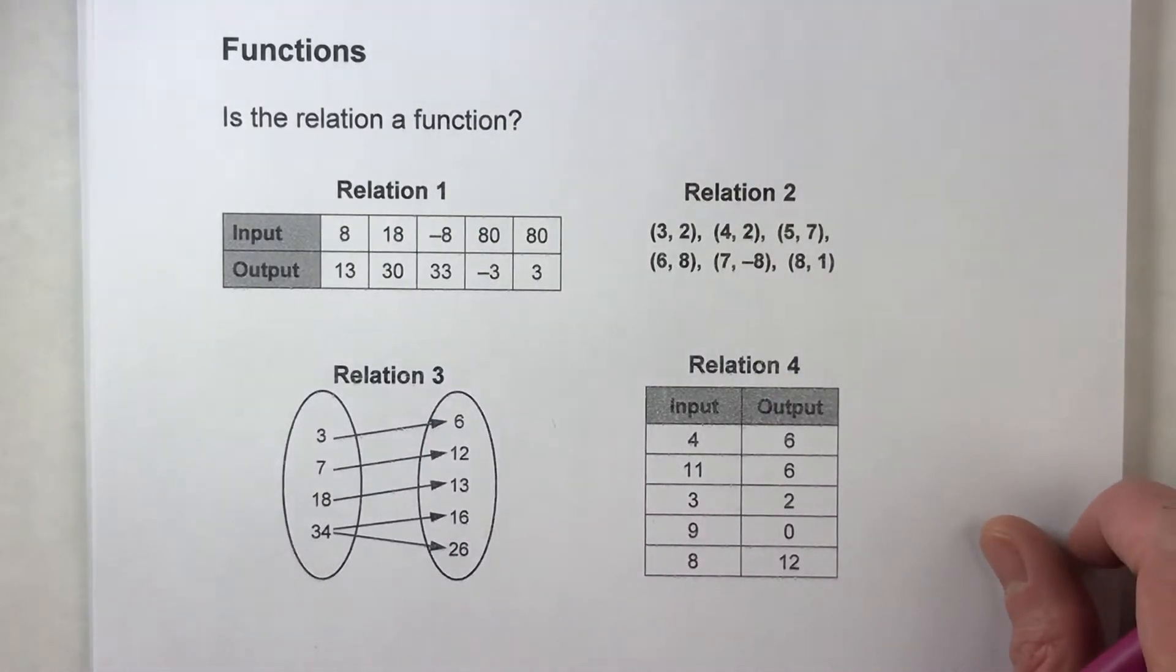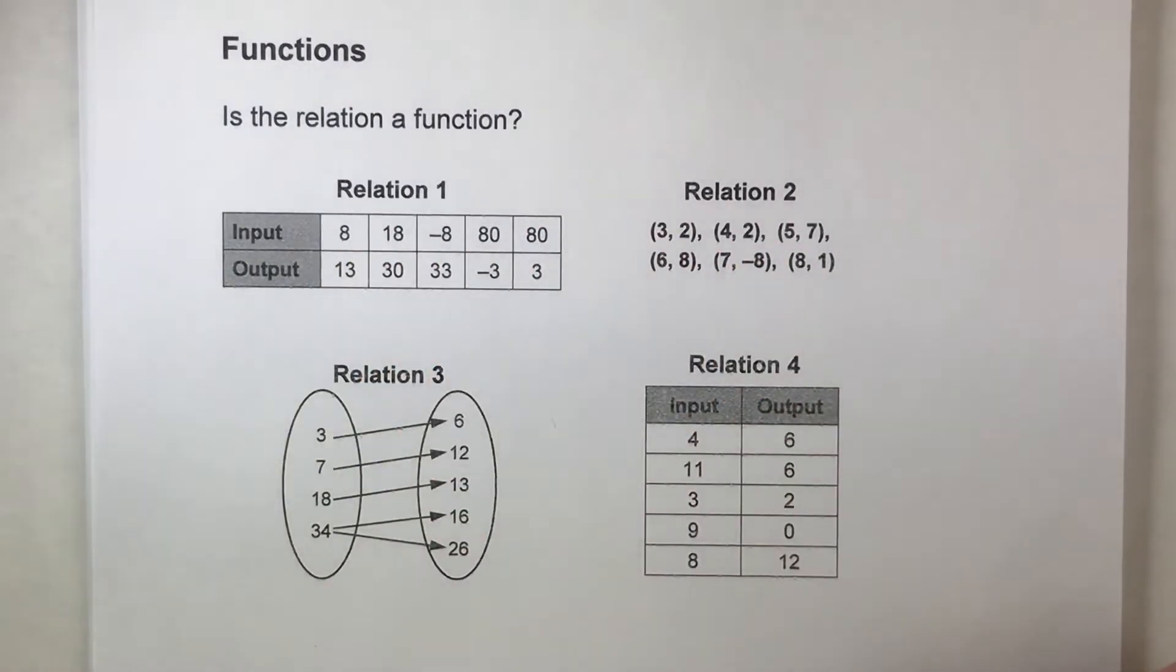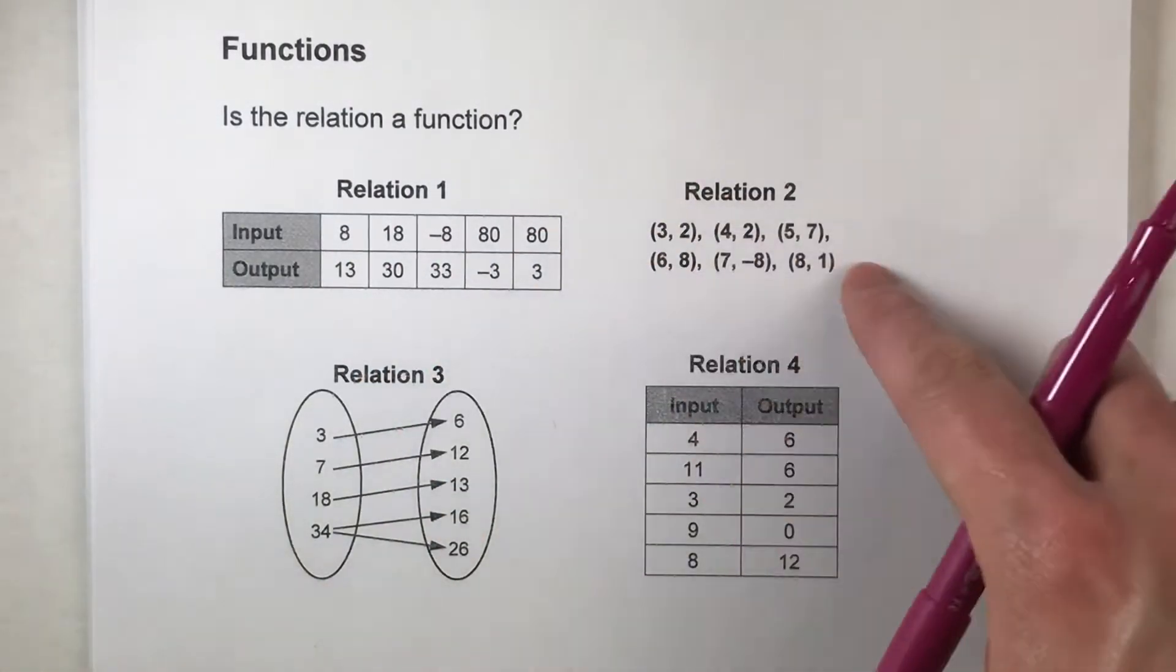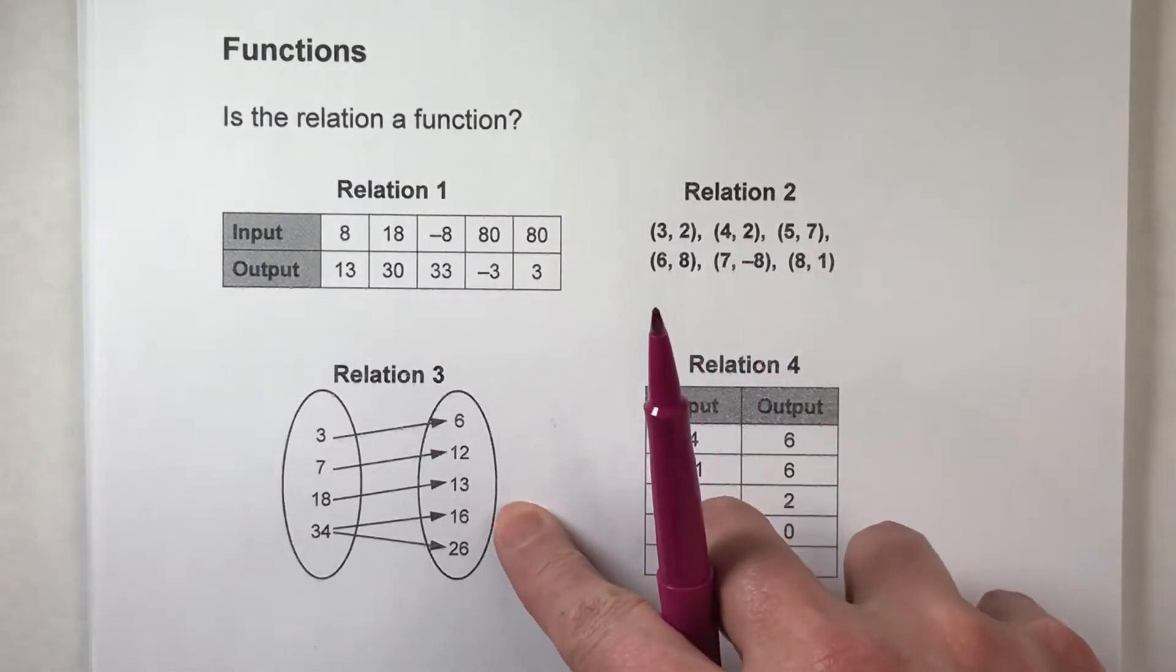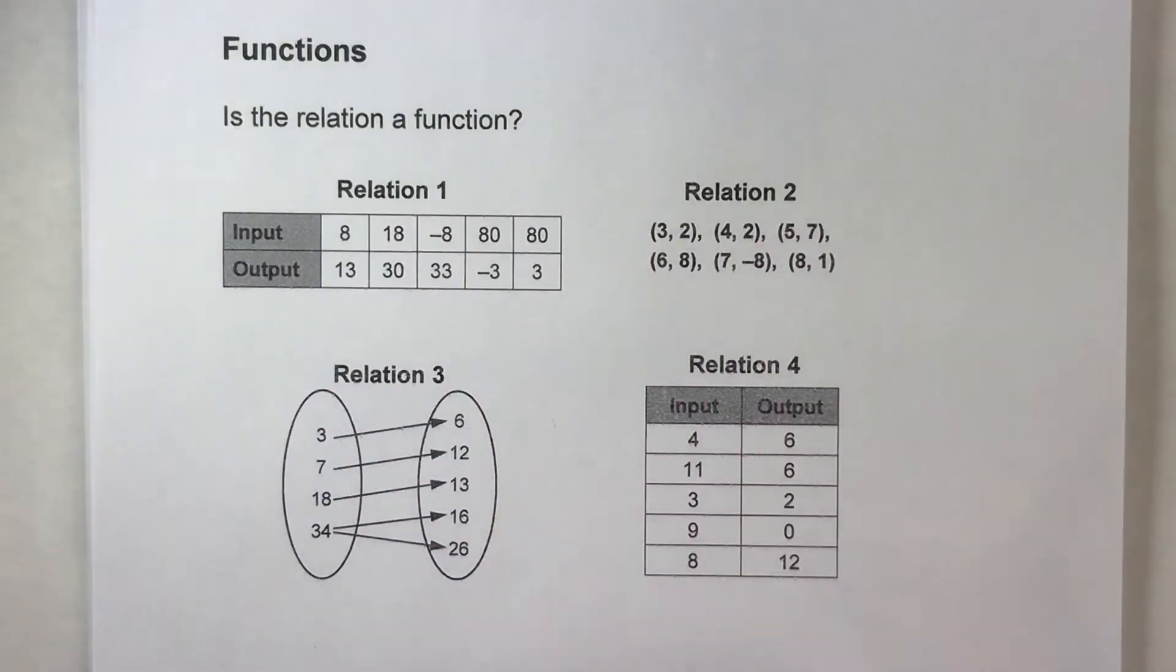The best way to understand this is to see a couple of examples. I've got four examples here, two of them are tables, one is a set of coordinates, and the other one is an arrow diagram. So let's kind of go through these.